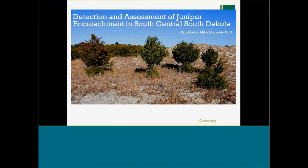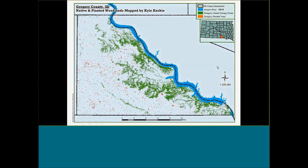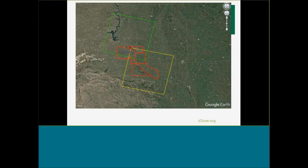Going forward, we also hope to have a better handle on cedar encroachment — the 'Green Glacier.' We've mapped closed canopy in some areas and are very interested in open canopy areas and how much time we have until they become closed canopy. We're working with South Dakota State University's Dr. Wimberly and graduate student Kyle Caskey on this mapping project and predictive modeling, using Landsat 8 imagery overlaid on a four-county area for ground truthing and analysis, with the objective of creating a tool applicable across the state and region.